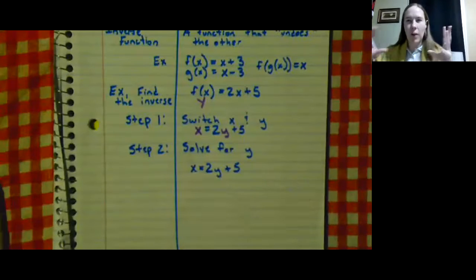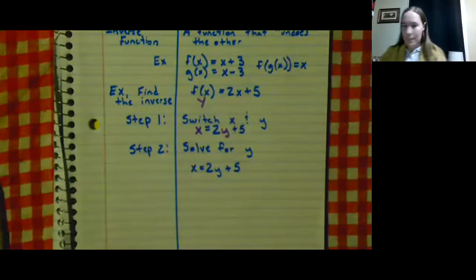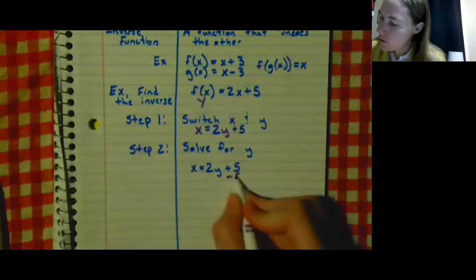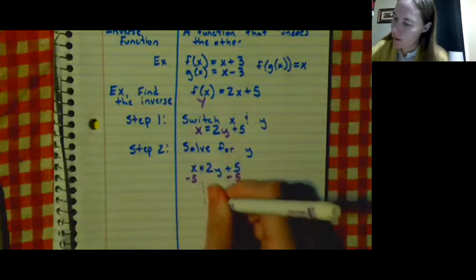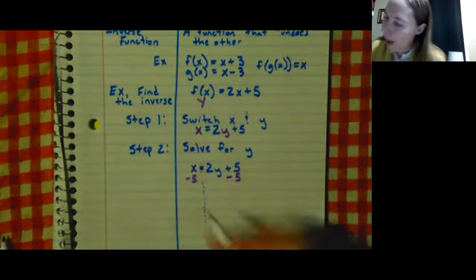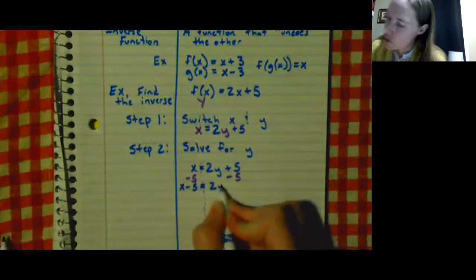So my first step, so I want to look at what's not touching my y first, as far away as possible. So I had that 5; I want to do the opposite to get rid of it. So I subtract 5 from both sides. I'm gonna draw my little line because I know that helps me. So now I have x - 5 = 2y.